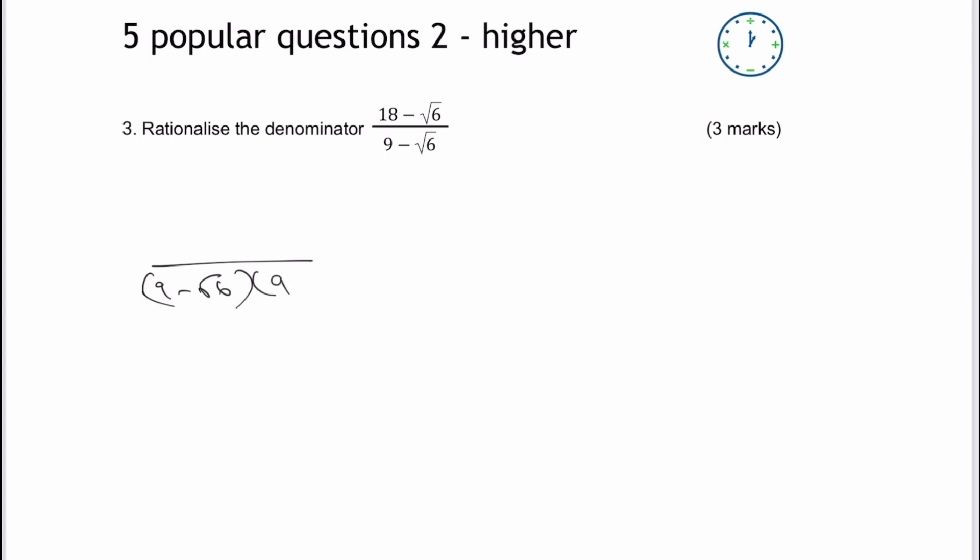But if I multiply it by nine plus root six, it has the effect of canceling out. You'll see what I mean in a minute. However, I've also got to multiply the top numerator by the same number. So I'm left with this situation where I need to just now expand that through.